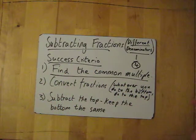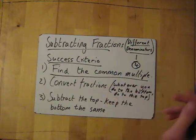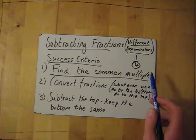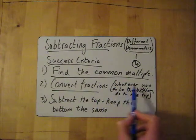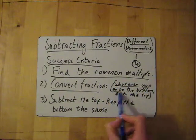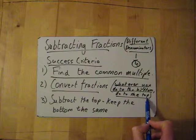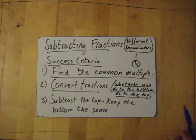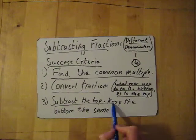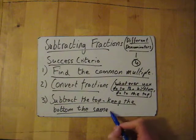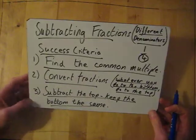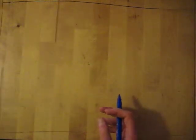So here are the steps. Number one: find the common multiple — basically what's in the times tables for both of those bottom numbers, the denominators. Then convert the fractions: whatever you do to the bottom, do to the top. And finally, subtract the top and keep the bottom the same. It's fairly straightforward — let's have a look at some examples.